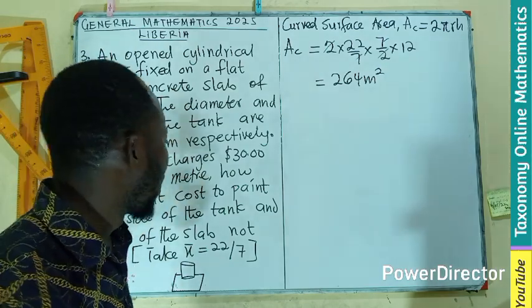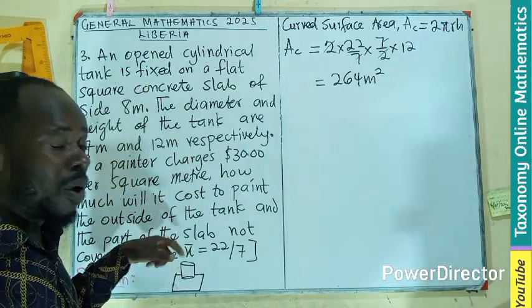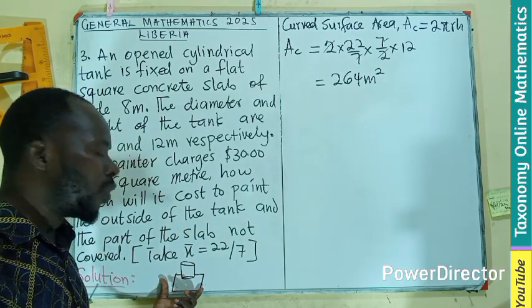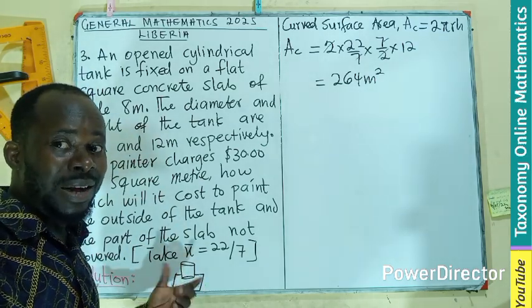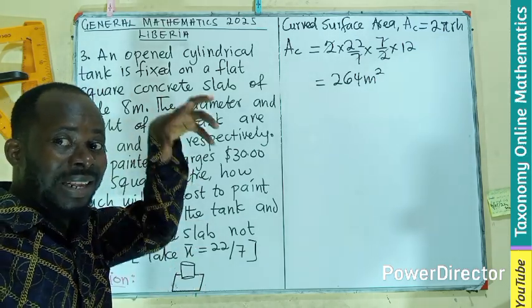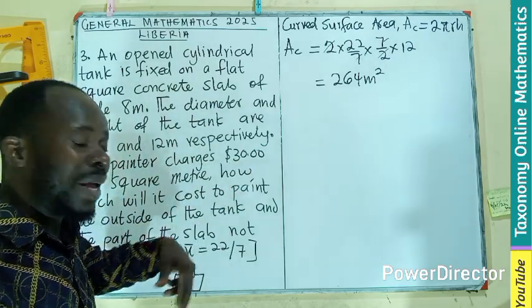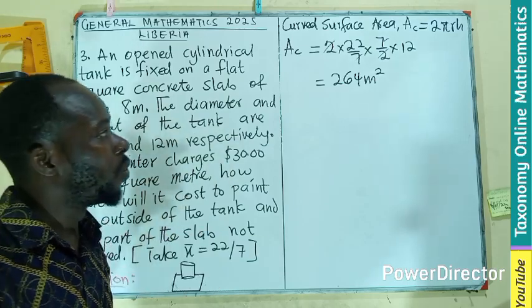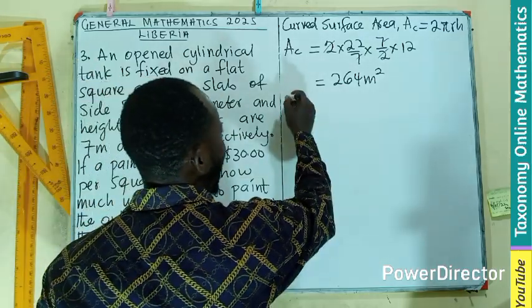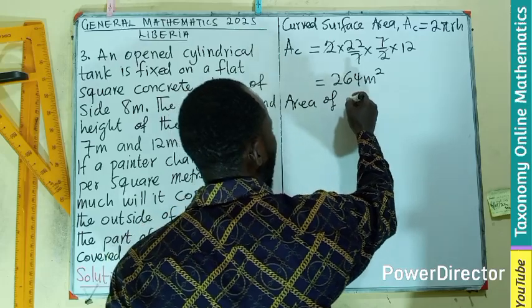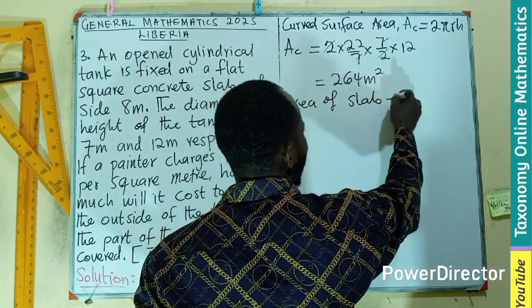What next to look at? We know the area of the cylindrical part that's going to be painted. Now we also need to know the one that will be painted, the remaining of where the cylinder is sitting. We need to take it out from the total area of the surface. So I'm going to find area of the slab, which is a square.